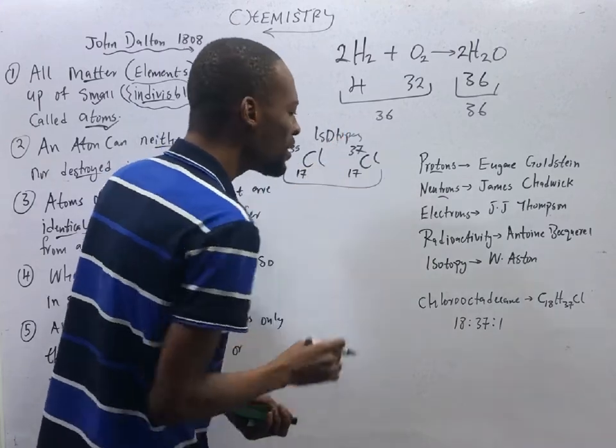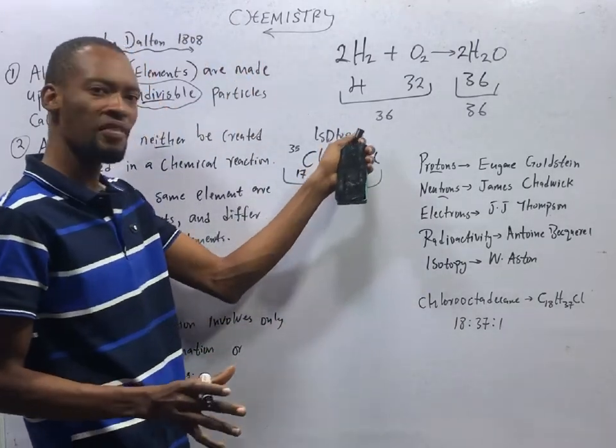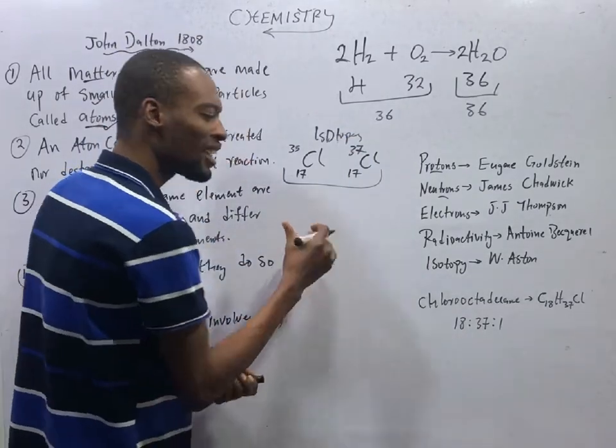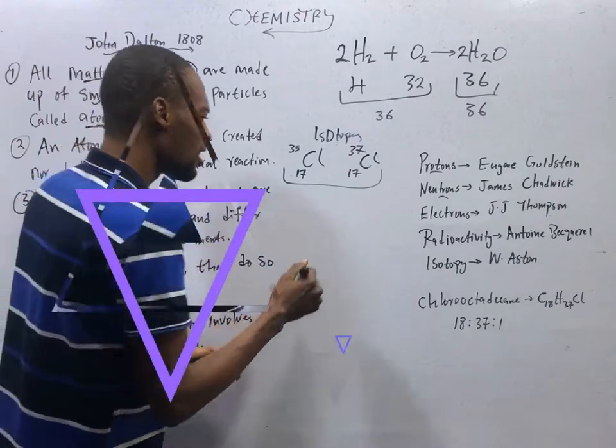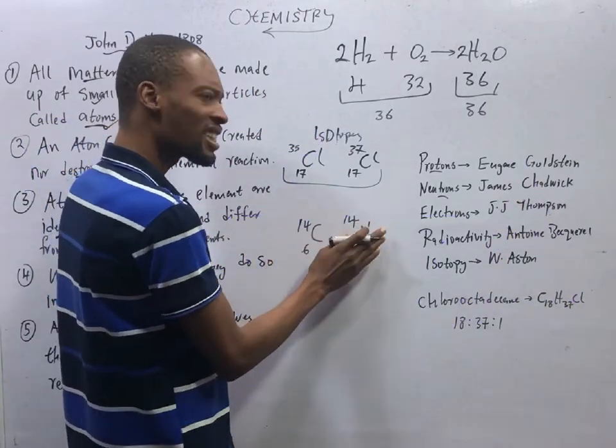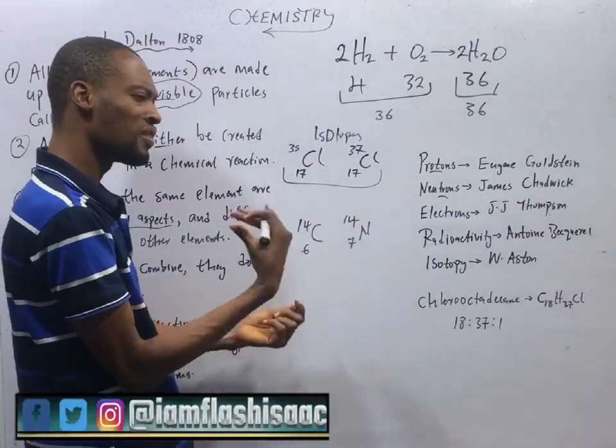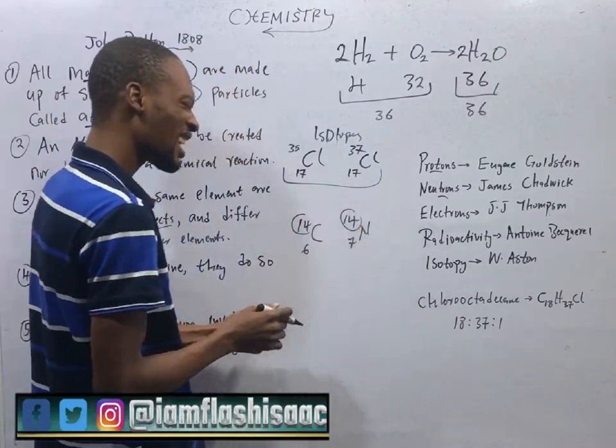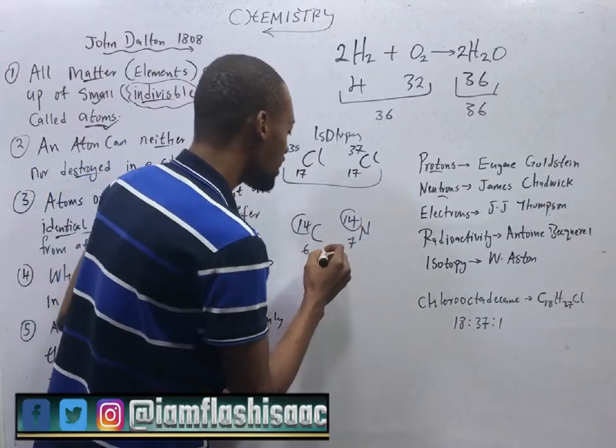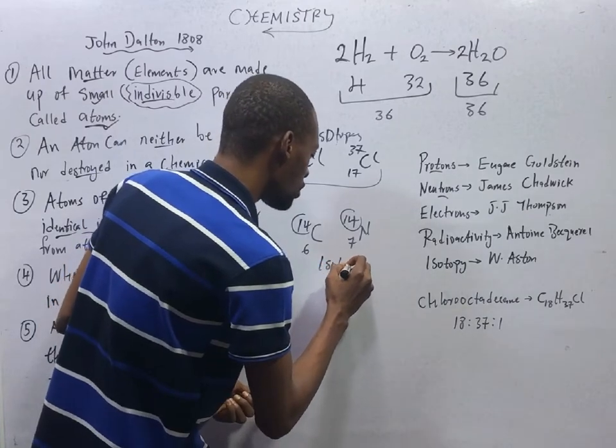Atoms of the same elements, the same atomic number, they have different atomic mass. Then we have a situation where atoms of different elements, they have the same atomic mass. This is carbon. This is nitrogen. They are atoms of different elements. But you see that they have the same mass. At least they have similar properties.